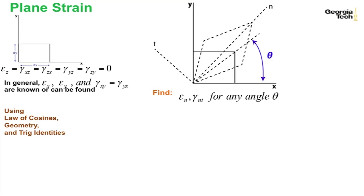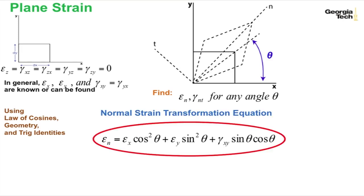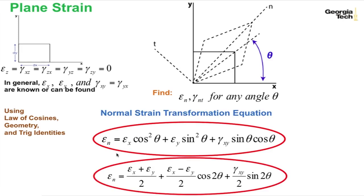And we last time did a lot of math. We used the law of cosines on this geometry and some trig identities and came up with the normal strain transformation equations. So if we know epsilon x, epsilon y, gamma xy, we can find epsilon normal.